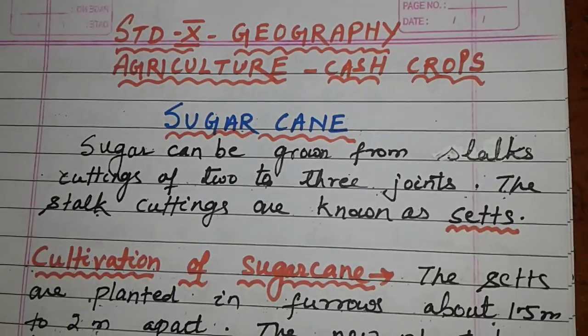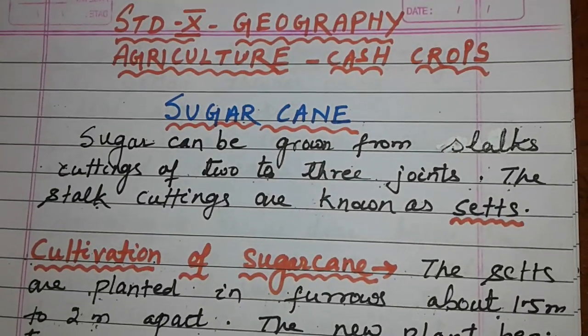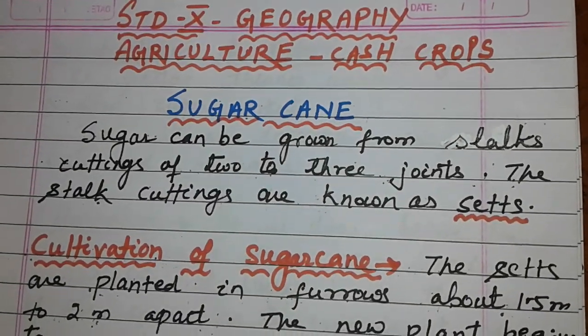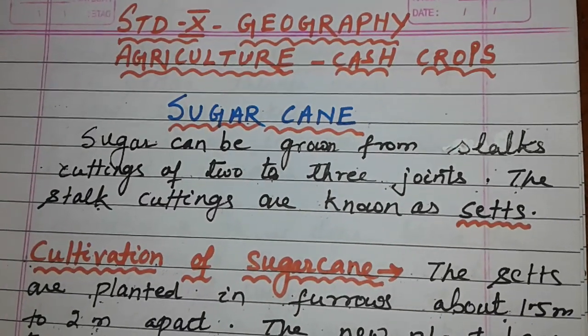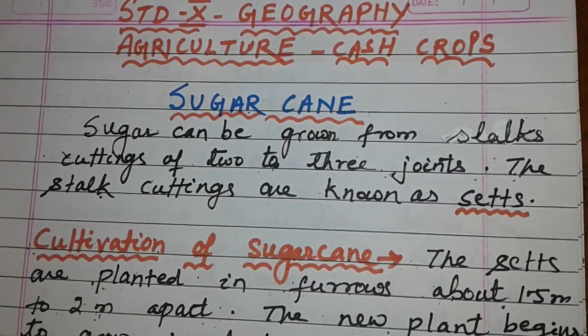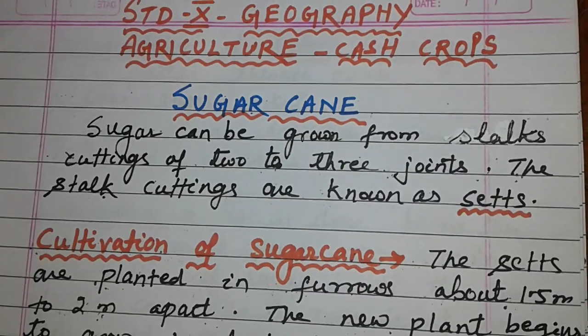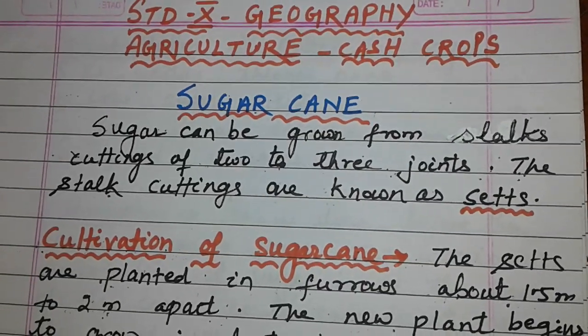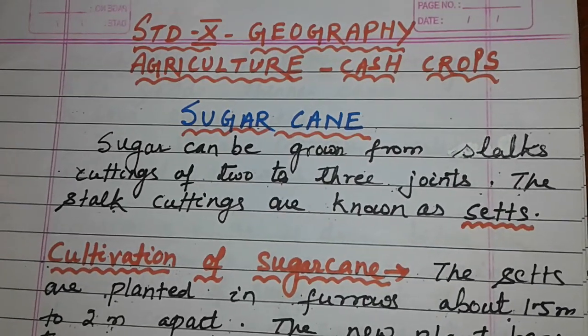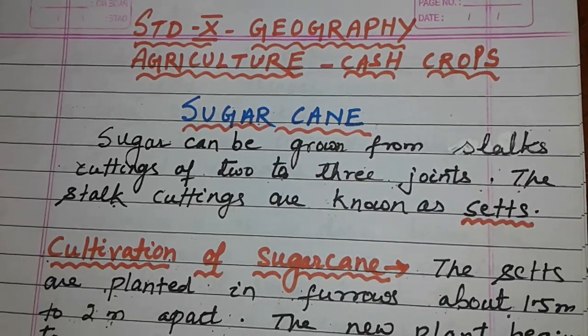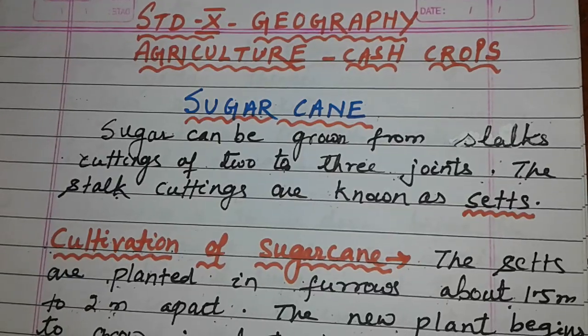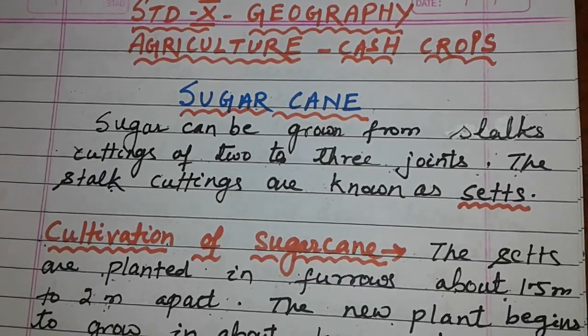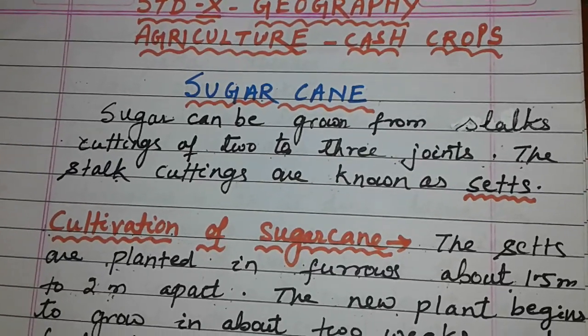Hello children, I am Mish Jalshree. Here today we will read Standard 10 Geography Agriculture lesson — Cash Crops. From cash crops today we will discuss about sugarcane.